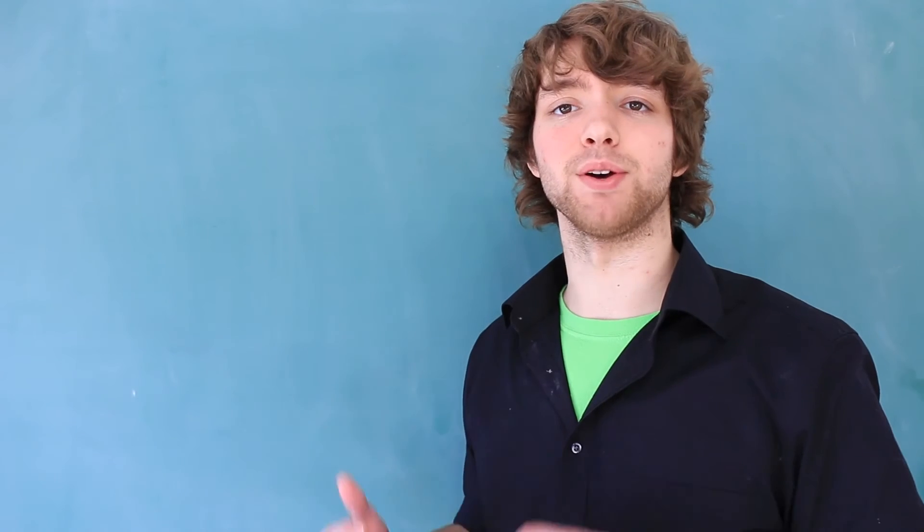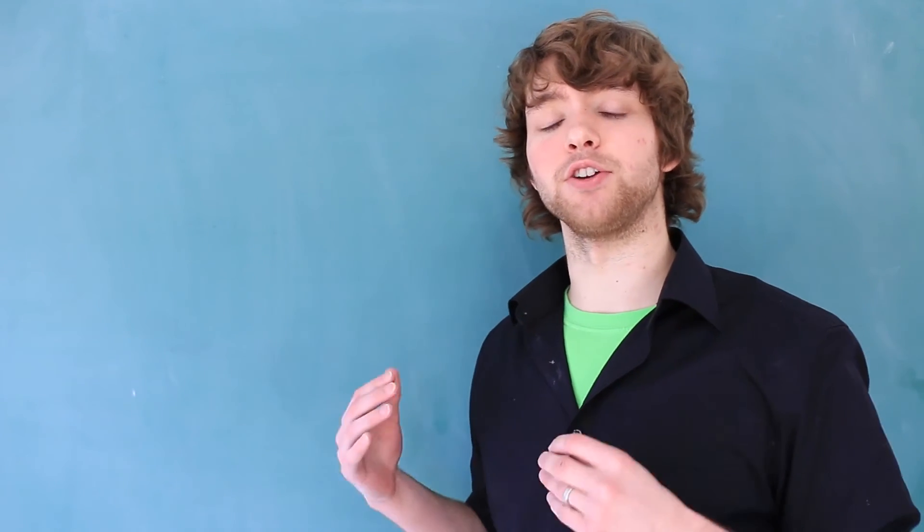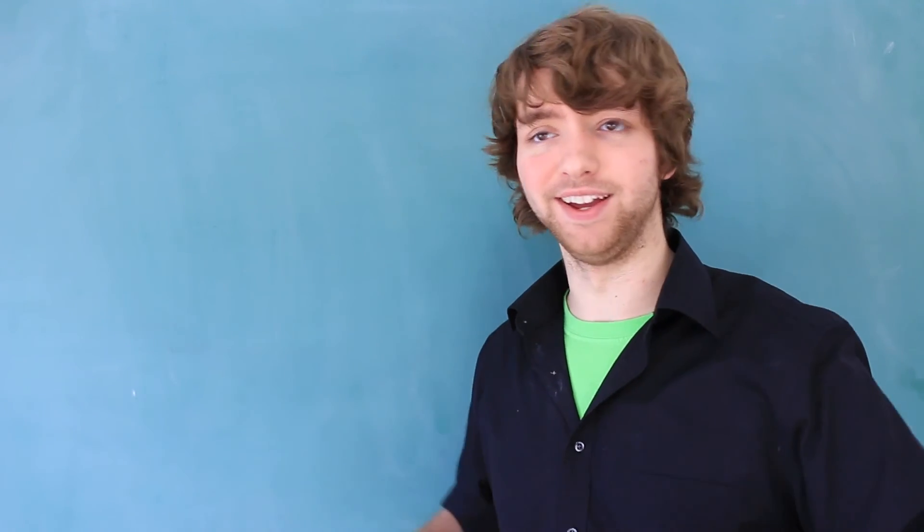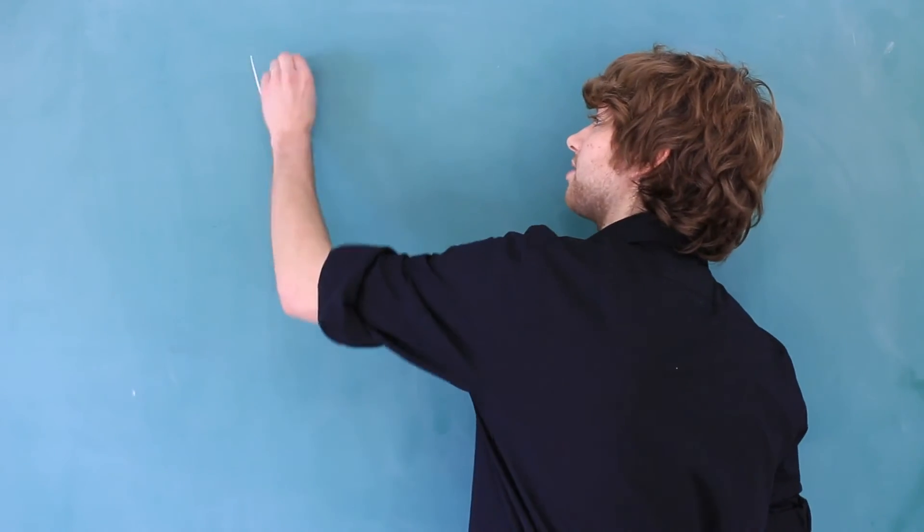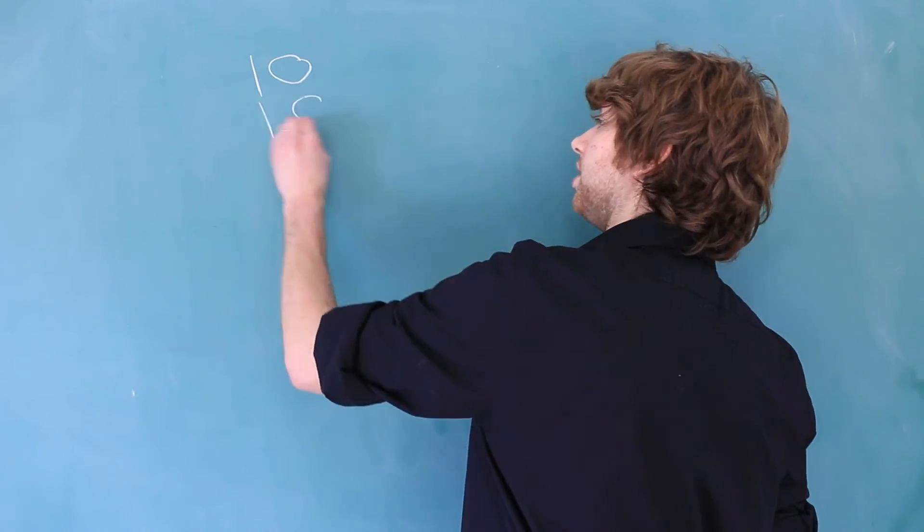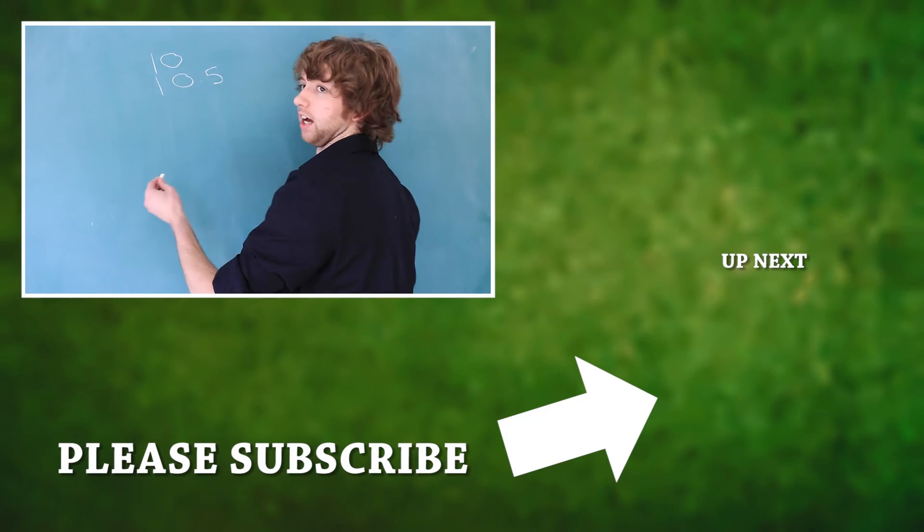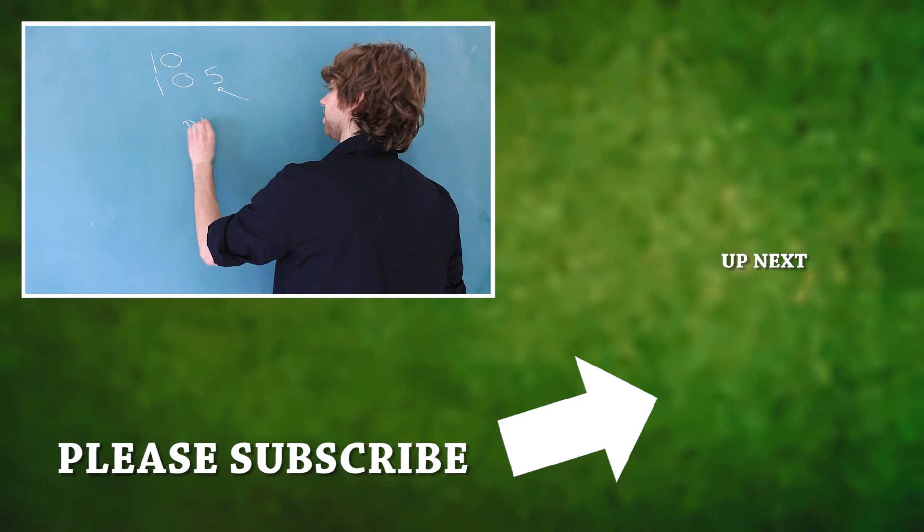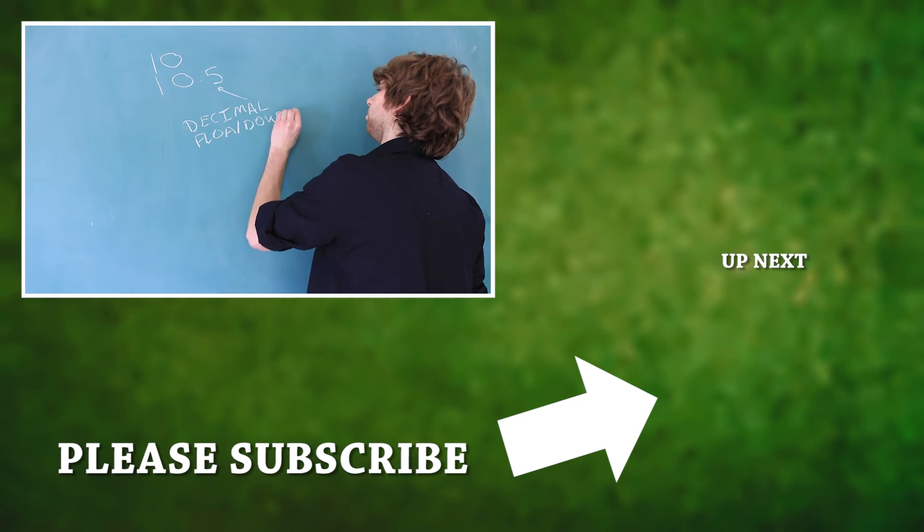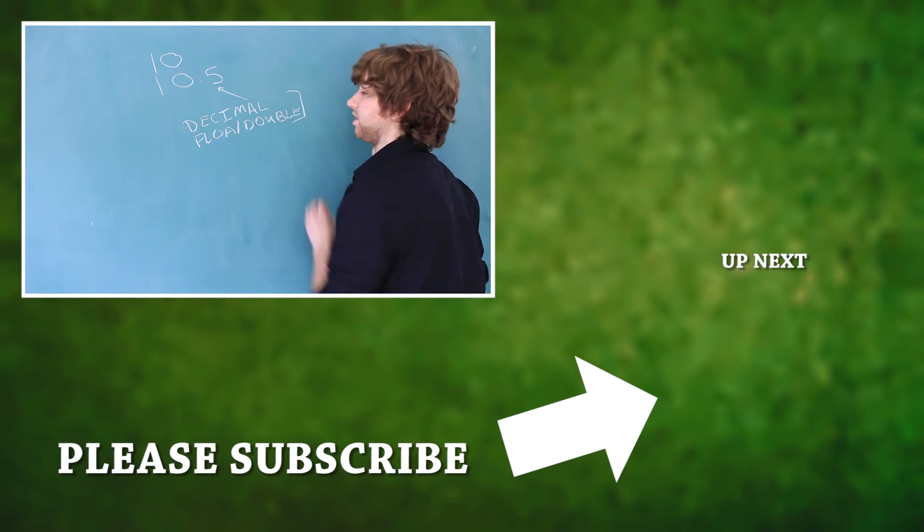Now the last thing I want to mention about the integer data types is that they are used to store whole numbers, so that means 10 is allowed, but 10.5 is not allowed. If you want to store a decimal, you need to use either the decimal type, or float or double, which we will talk about all of these in the upcoming videos.